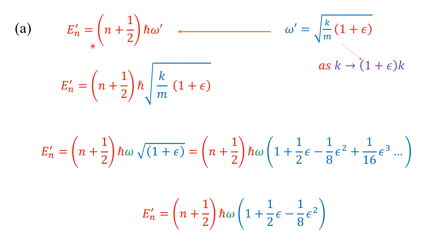Our first task is to find the perturbed energy E_N'. This is equal to (N + ½)ℏω', where ω' = √(K(1 + ε)/M). Because K is perturbed from K to (1 + ε)K, we replace K with K(1 + ε). Substituting for ω', we know K/M = ω², so taking the square root gives ω. We can take ω out of the square root, giving ℏω√(1 + ε).